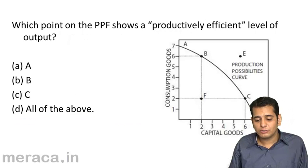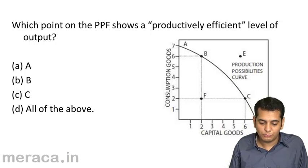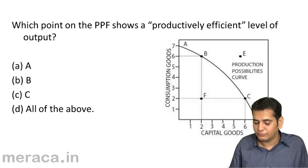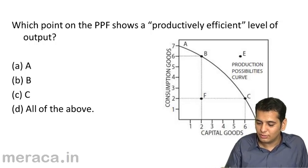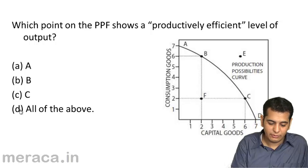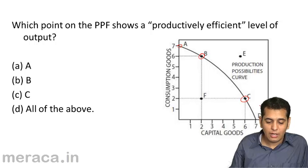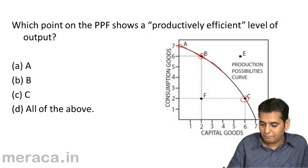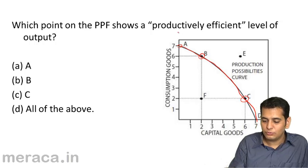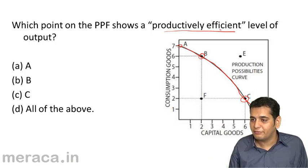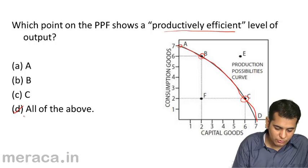Next: which point on the production possibility frontier shows a productively efficient level of output? Is it point A, point B, point C, or all of the above? The answer is all of the above, because points A, B, and C are all on the production possibility frontier, showing a level where production is efficient.